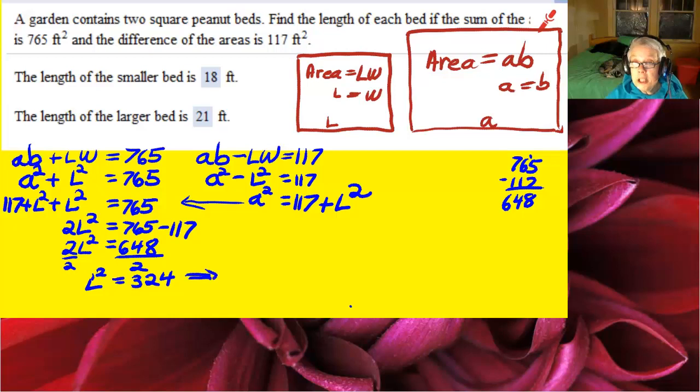Which means L is going to equal the square root of 324, and that happens to equal 18. So L is 18.